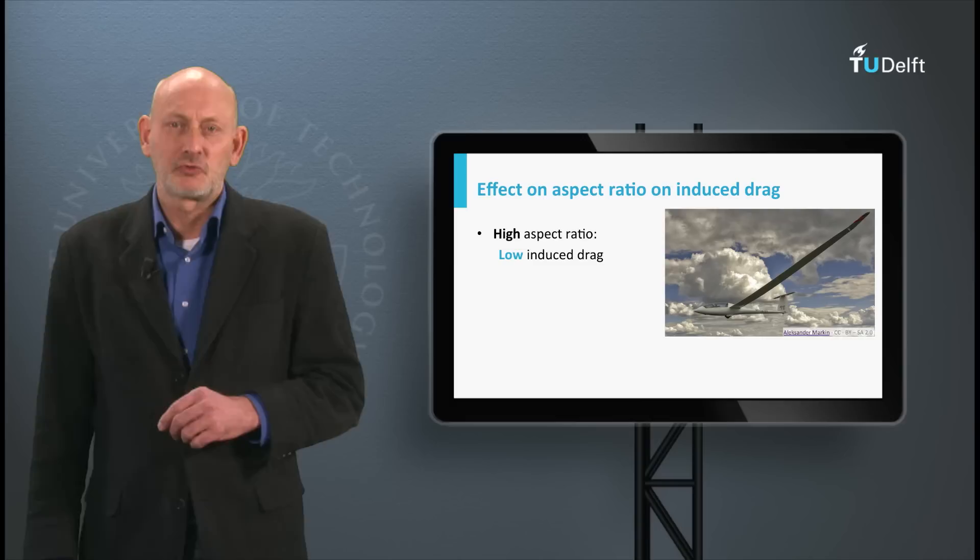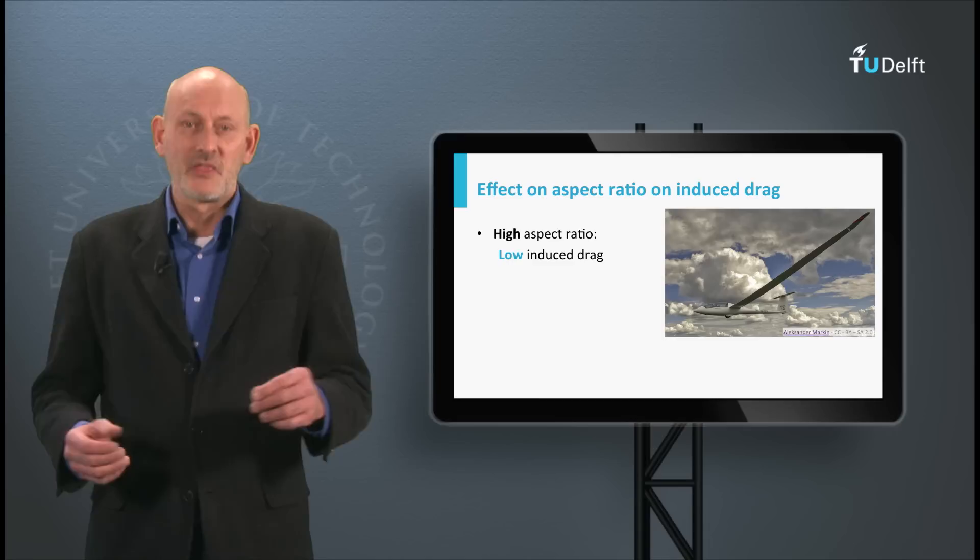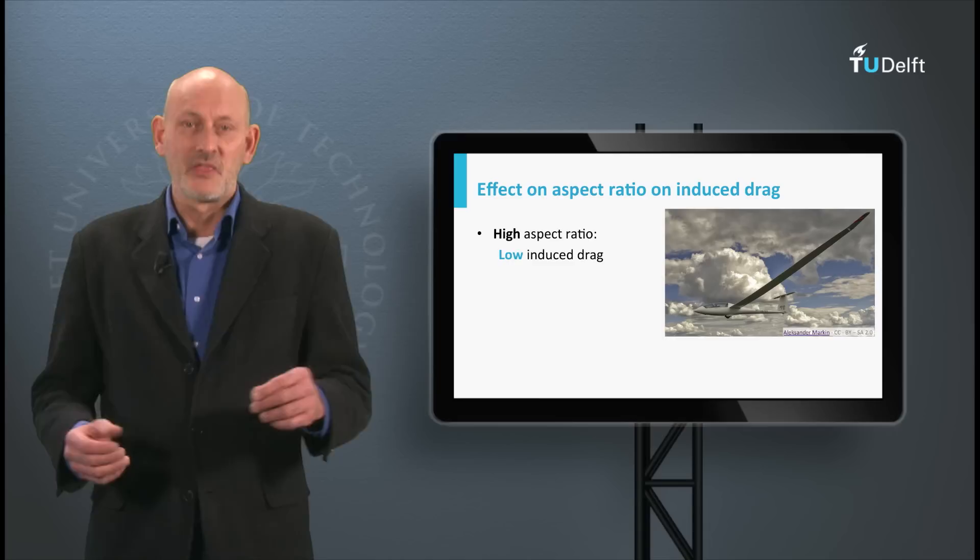The aspect ratio A has a big influence on the total drag of a wing. You can imagine that when the aspect ratio is high, for instance for a glider, and the wing comes closer to a two-dimensional situation, the drag will be smaller than for a low aspect ratio wing.